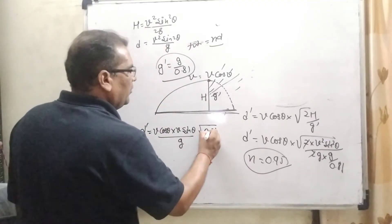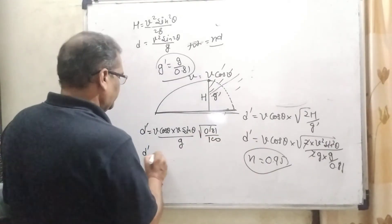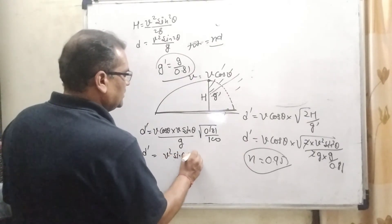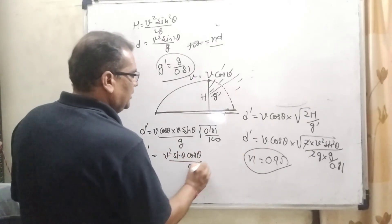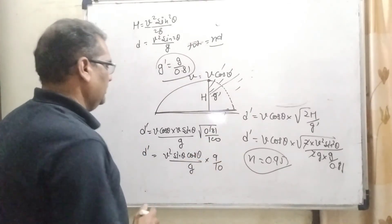Now it can be written as, removing this decimal, now 0.100. It means V squared sine theta cos theta upon g, now it is 9 by 10.